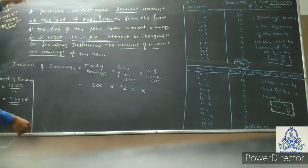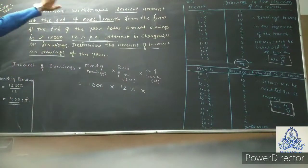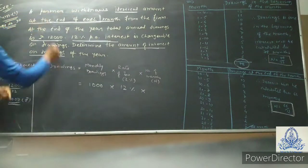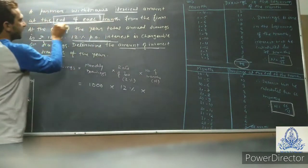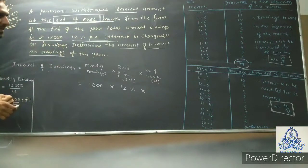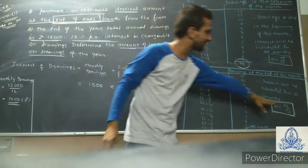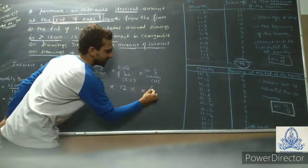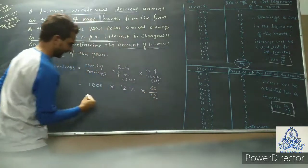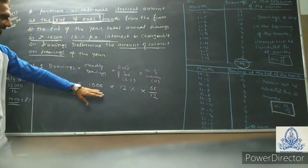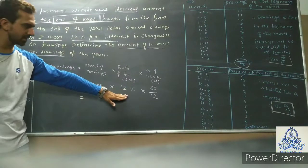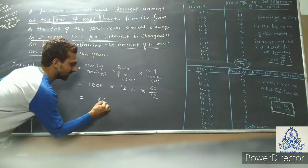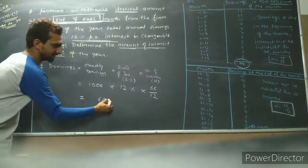In this sum, it is given that the partner withdraws at the end of each month. So we use 66 divided by 12. The calculation is: 1,000 × 12% × 66/12, and the answer becomes 660. So the interest on drawings is 660.